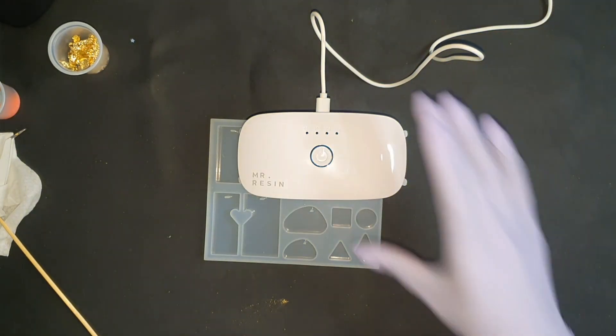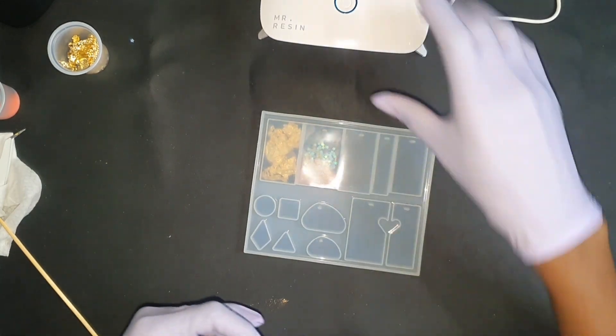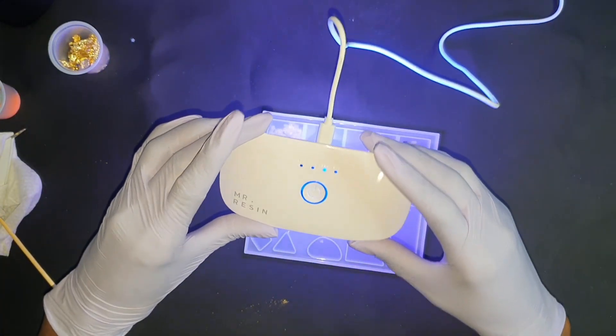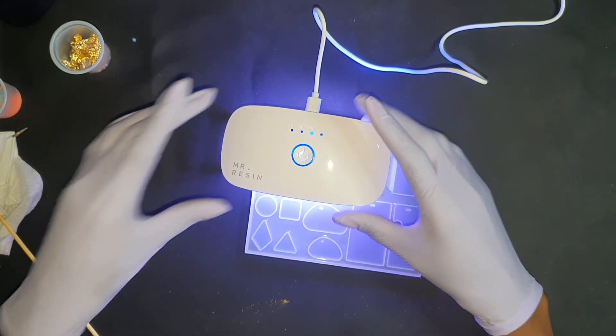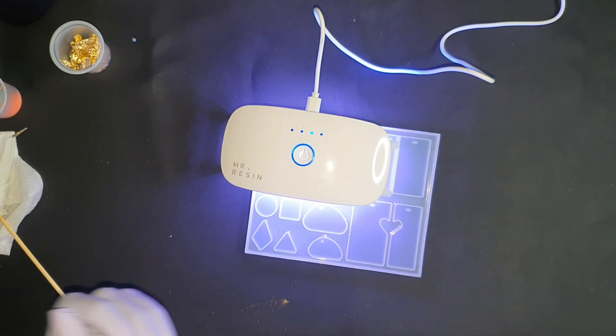So once this side is finished I am going to flip them over and I'm gonna cure from the next side. For 60 seconds I'm also gonna cure from this side just to make sure that both sides are cured properly because we don't want any sticky surfaces going on. Hopefully my first try will be a success.